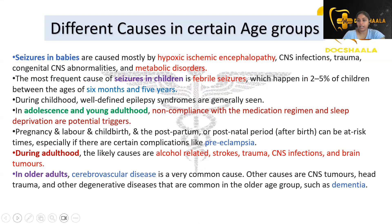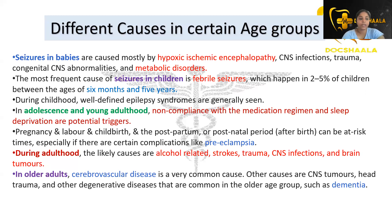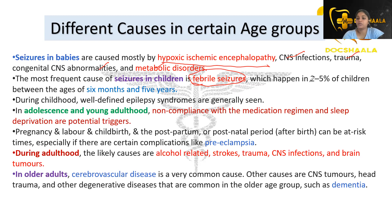There are different causes in certain age groups. Seizures in babies are caused by hypoxic ischemic encephalopathy, CNS infections, trauma, congenital CNS abnormalities, and metabolic disorders. The most frequent cause of seizures in children is febrile seizures, occurring in two to five percent of children between the ages of six months and five years. During childhood, well-defined epilepsy syndromes are generally seen.